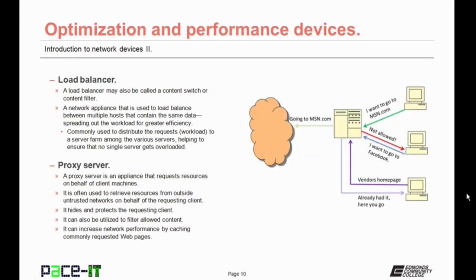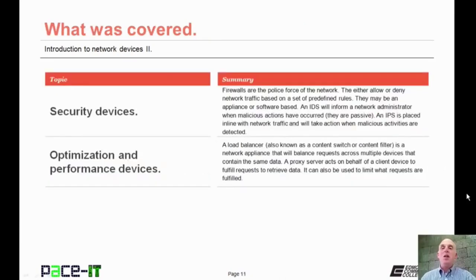Then there's the proxy server. A proxy server is an appliance that requests resources on behalf of a client machine. It's often used to retrieve resources from outside untrusted networks on behalf of the requesting client. It hides and protects that requesting client from the outside untrusted network. It can also be utilized to filter allowed content back into the trusted network, and it can increase network performance by caching or saving commonly requested web pages. That concludes this session on Introduction to Network Devices Part 2.